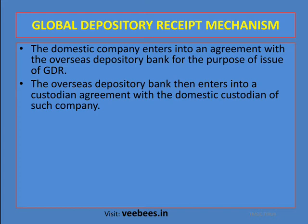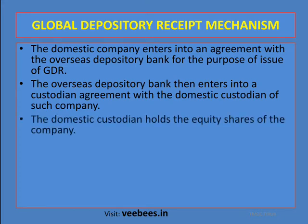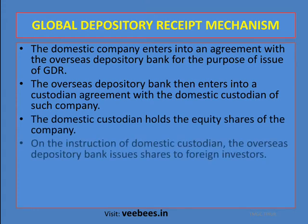The GDR mechanism works as follows: the domestic company enters into an agreement with the overseas depository bank. The depository bank then enters into a custodian agreement with the domestic custodian bank. The domestic custodian holds the shares of the company, and based on the custodian's instruction, the overseas depository bank issues depository receipts to foreign investors.